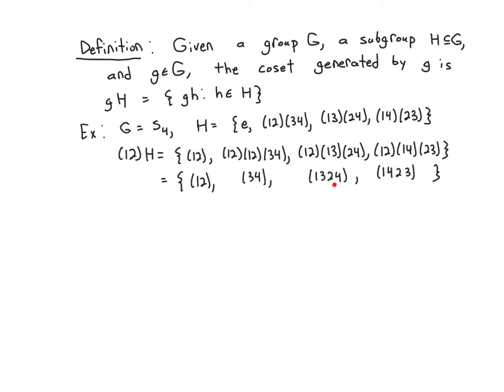This cycle turns out to be this one. Why? Because one goes to three, then three goes to one, which goes to two, two goes to four, and four must go back to one at that point. And a similar calculation here. So this is this coset.